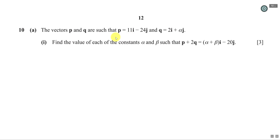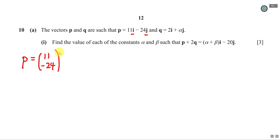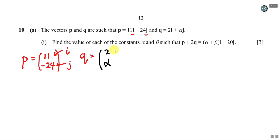The vectors p and q are such that p equals 11i minus 24j, and q equals 2i plus αj. Whenever I see a question in terms of i and j, I like to write it in column vector form. So p is written as a column with 11 on top and negative 24 on the bottom, and q is written as 2 on top and α on the bottom.